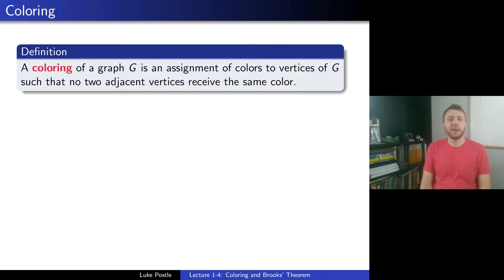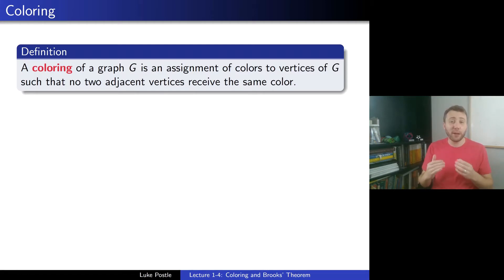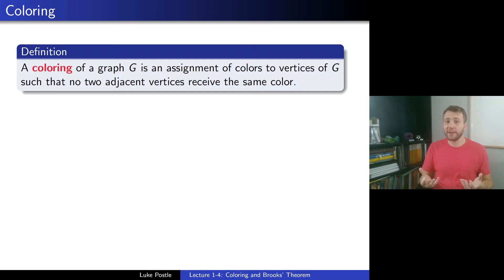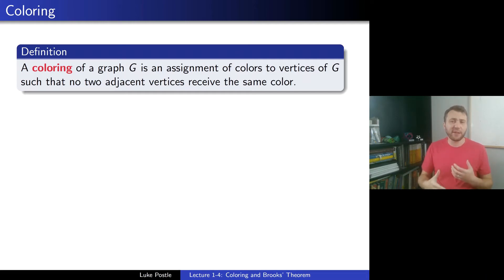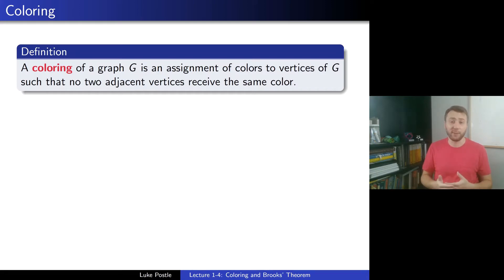So what is coloring? A coloring of a graph G is an assignment of colors to vertices of G such that no two adjacent vertices receive the same color. It's a labeling wherein we've imposed a local constraint that adjacent vertices cannot receive the same color. Graph coloring is one of the most studied and storied areas of graph theory, with history tied to the four color theorem, dating back to the coloring of maps where faces are treated as vertices. Here we're doing vertex coloring.